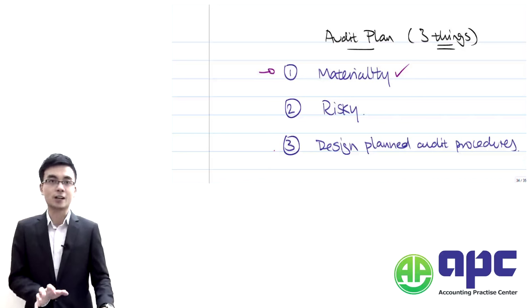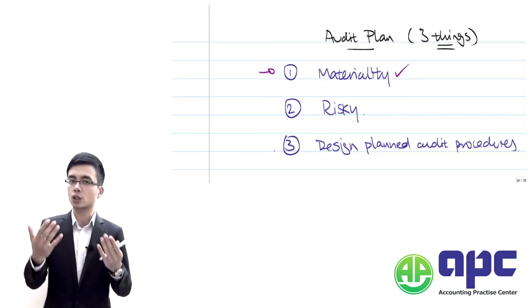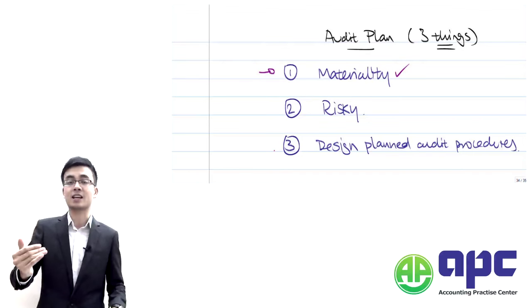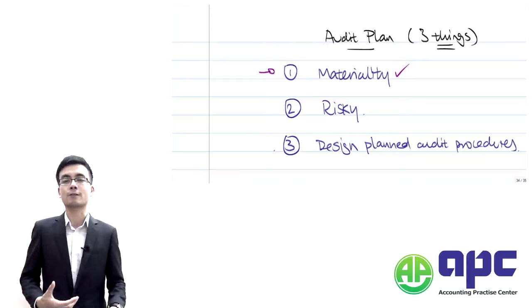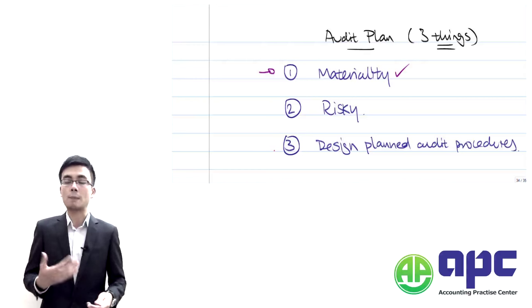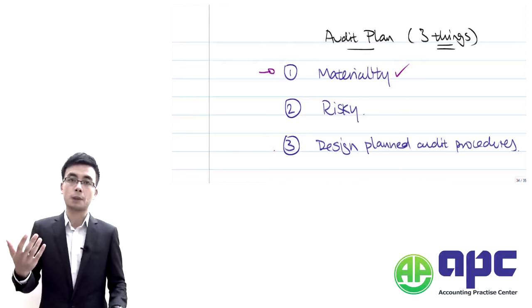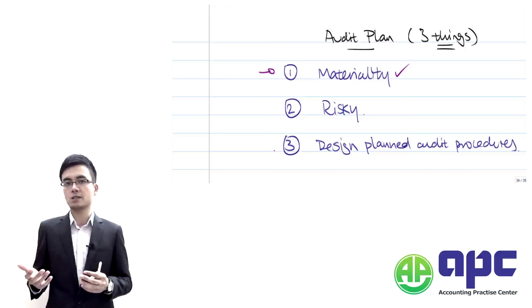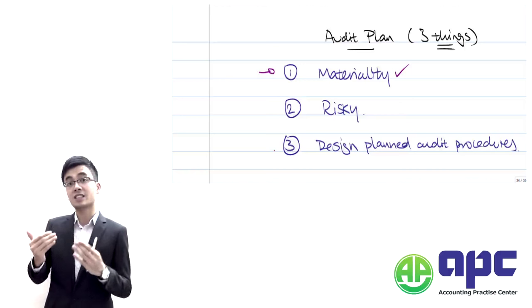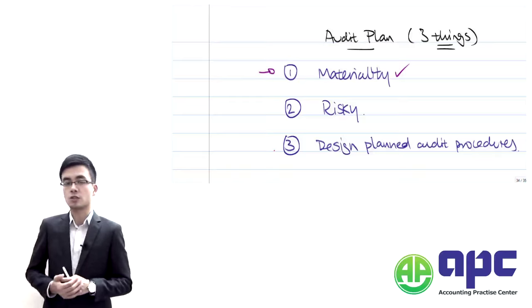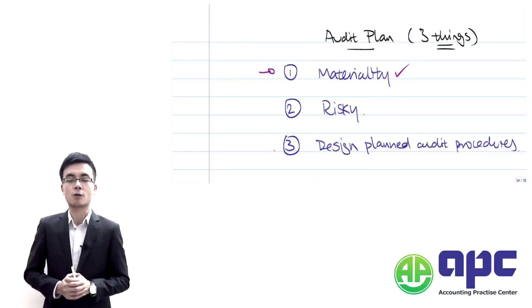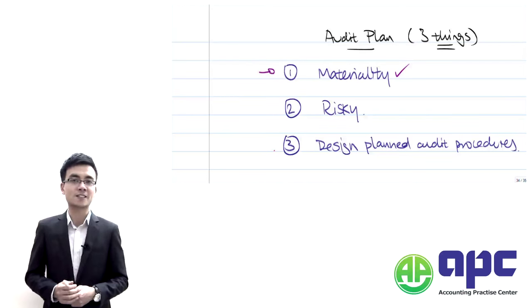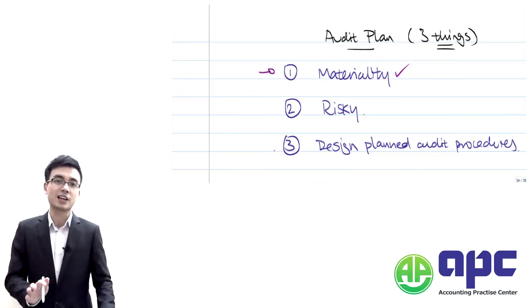What we're going to do is check the balances within the financial statements and calculate the materiality level. Nowadays we have computers — we can use CAT, or computer-assisted auditing techniques, to help us audit the balances within the financial statements. That covers materiality. Now let's look at the next element, which is risk.